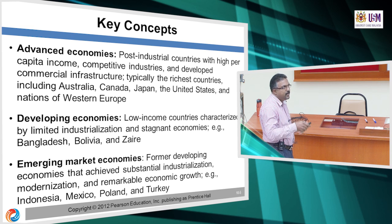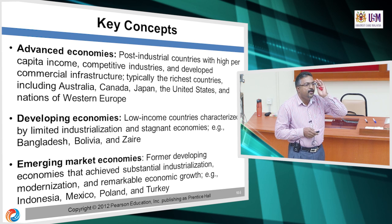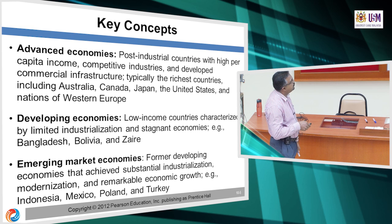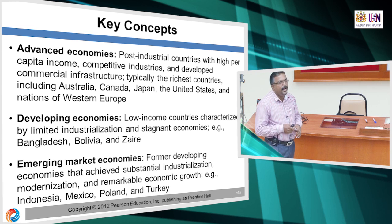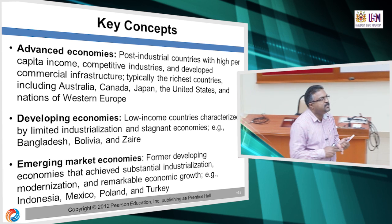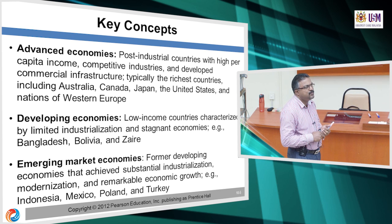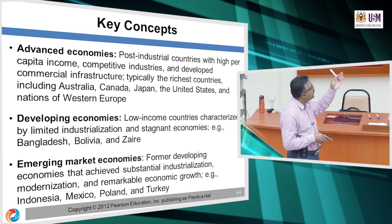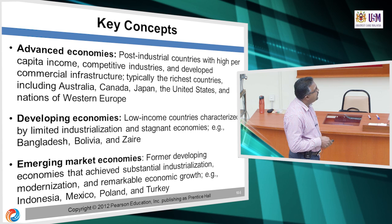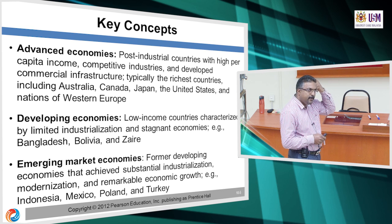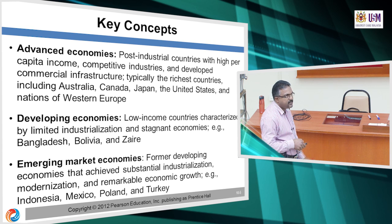Now let us look at some key concepts. There are emerging market economies, the incumbent advanced economies, and developing economies in the middle. Advanced economies include Australia, Canada, Japan, US, UK, and Western European countries like France. A lot of Malaysians migrate to these advanced economies because of the high quality of life and high salaries — for example, three times higher salary than Malaysia.